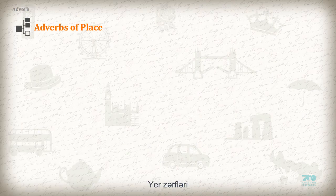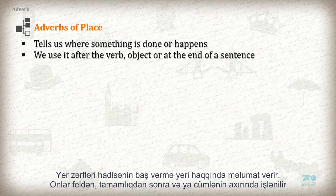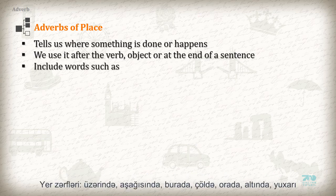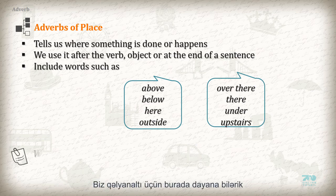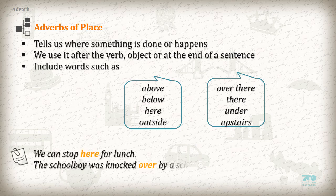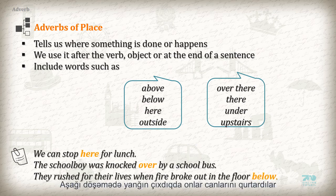An adverb of place tells us where something is done or happens. We use it after the verb, object, or at the end of a sentence. Adverbs of place include words such as: above, below, here, outside, over there, there, under, and upstairs. For example: 'We can stop here for lunch.' 'The schoolboy was knocked over by a school bus.' 'They rushed for their lives when fire broke out in the floor below.'